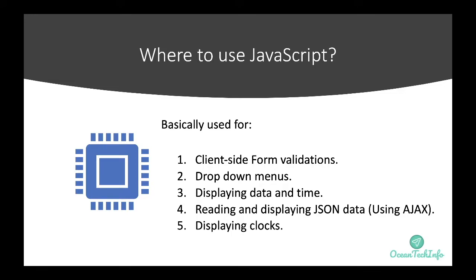Dropdown menus — for example, you have two dropdowns: one is a country and another is a city. When you select any country, a corresponding list of cities should be filled into the city dropdown. This can also be achieved with the help of JavaScript.